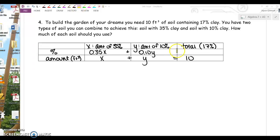This last cell, we want to represent the amount of our total soil that is actually clay. And we want it to be 17%. So we're going to do 17% times 10 cubic feet of soil to get 1.7. We want this to add up to 1.7.